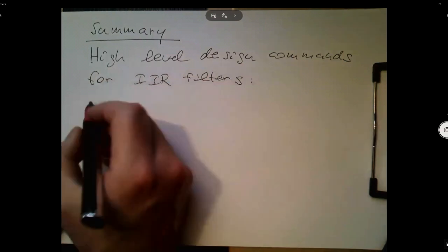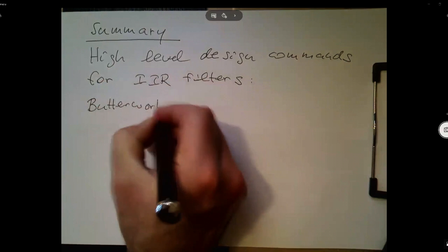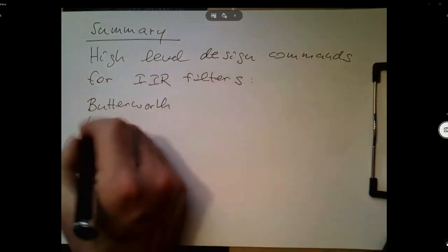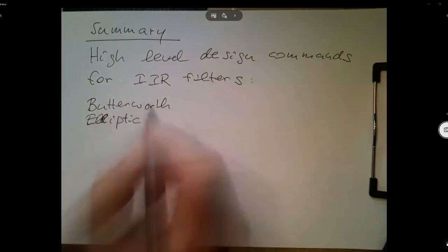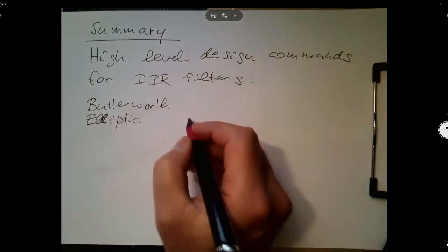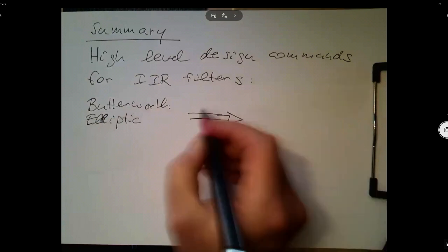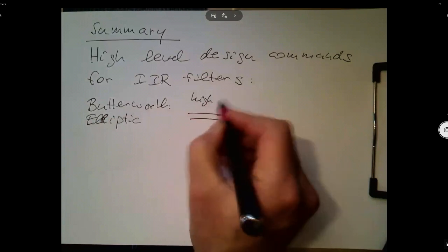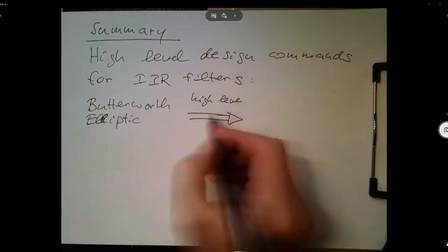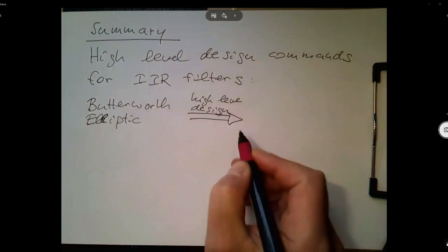So what do we do? We choose our favorite analog filter - Butterworth or Elliptic - and then we use our SciPy high-level design commands.